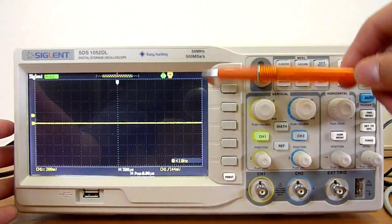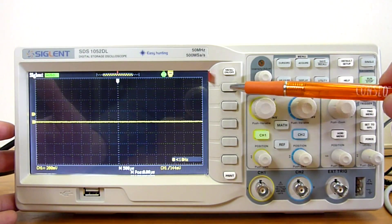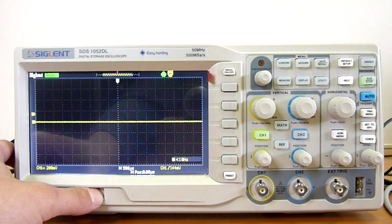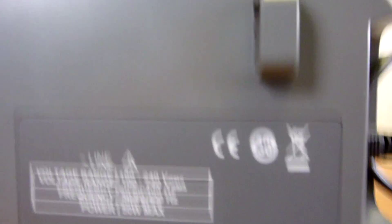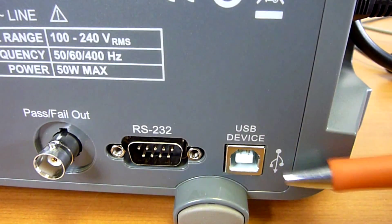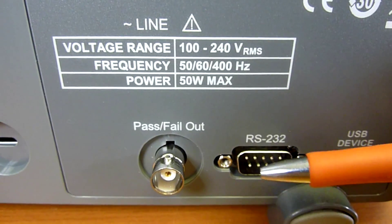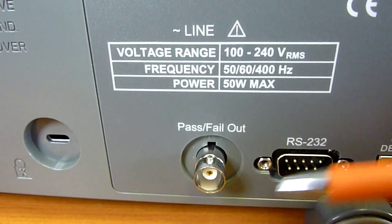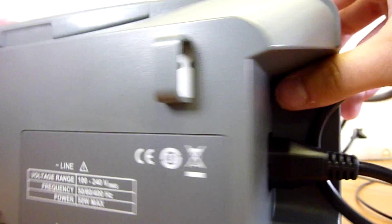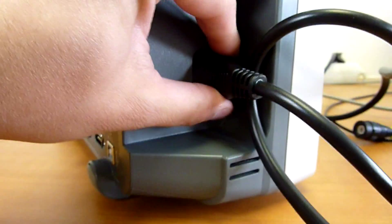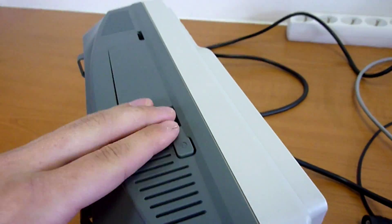The layout of components is pretty standard. Besides the displays we have menu buttons. Under the display is USB port for flash disk connection. On the other side we can see normal USB connector for connection to PC. As well as older RS-232 connector and pass-fail-out BNC connector. There is a power line connector and a handle and power button on the top.